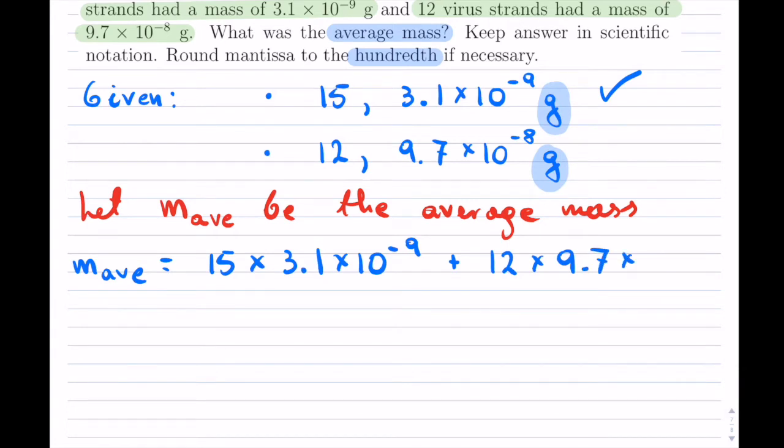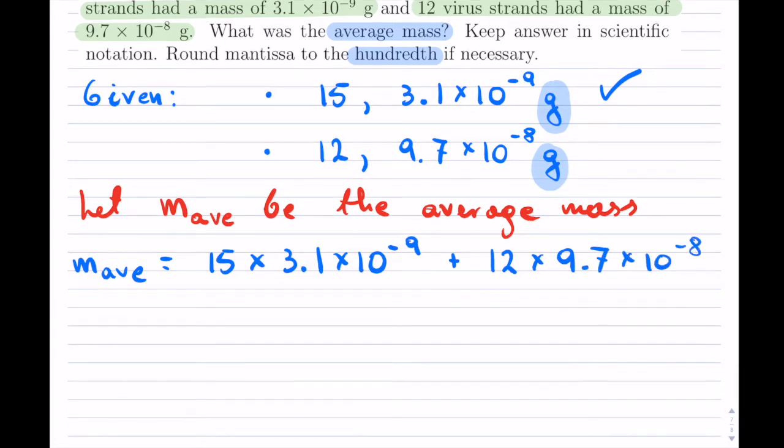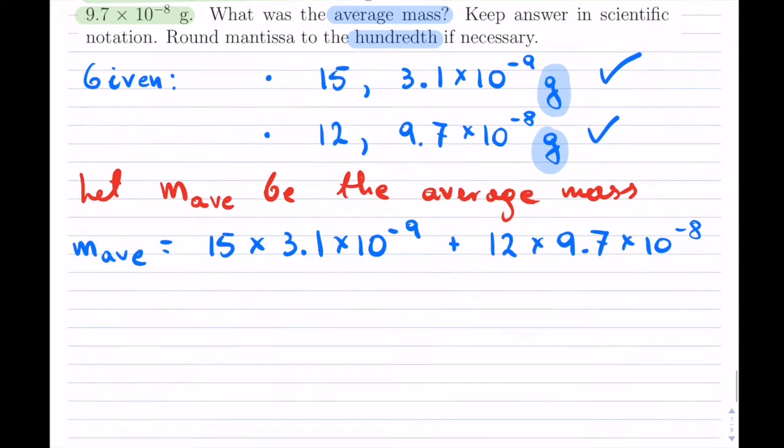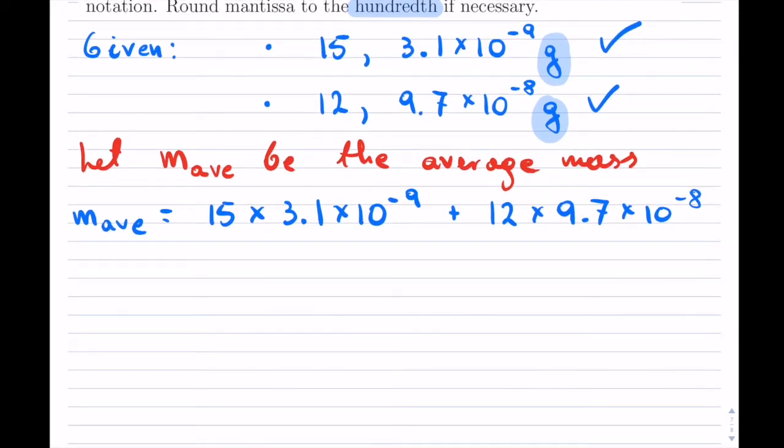And that is the total mass. So we have the total mass now. Because it's average, we're going to have to divide. We always take the total mass and divide by the number of how many you have.